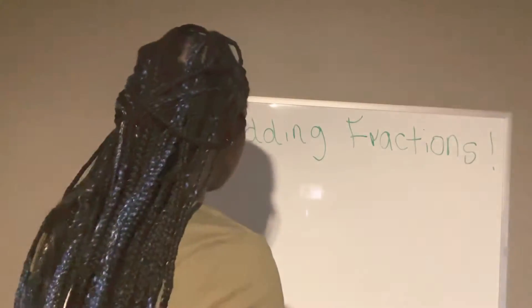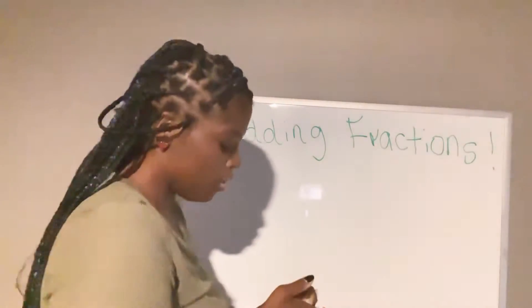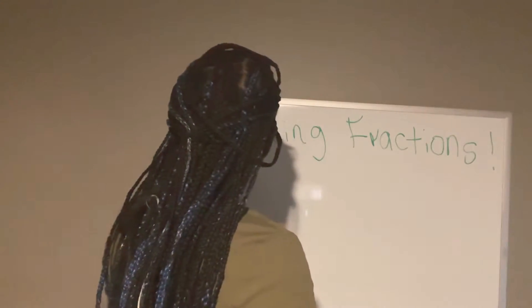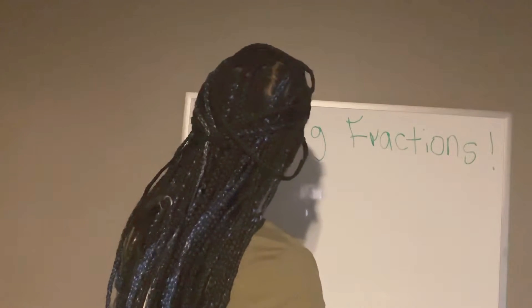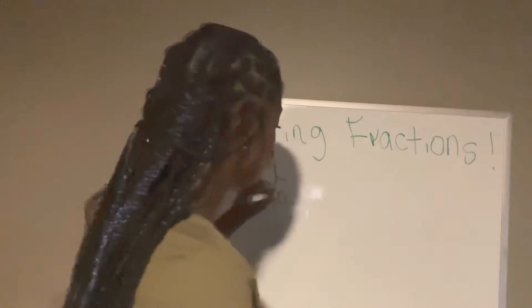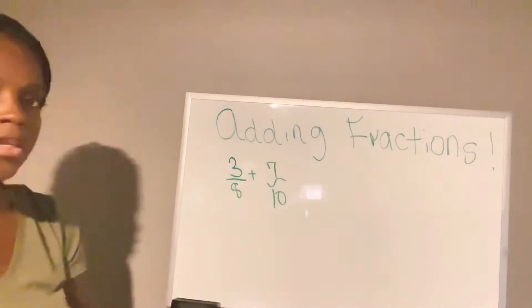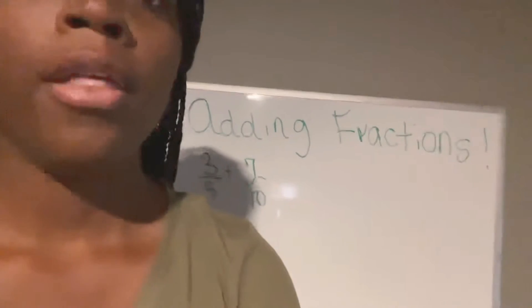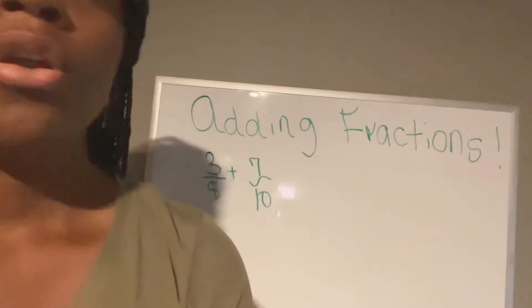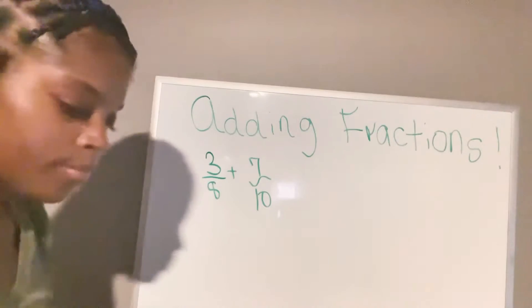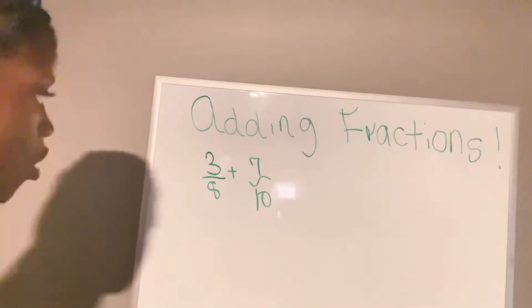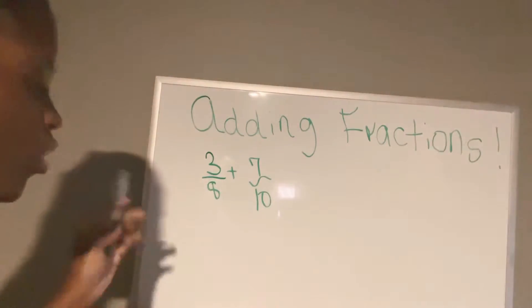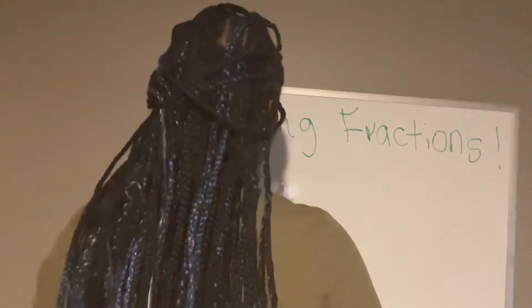This is going to be a short video. Let's look at a problem. Three over eight plus seven over ten. Let me zoom a little closer so you guys can see. Now, when you're adding fractions, if the denominator is the same, you have to do a bunch of stuff. So let me keep this right here, but in the meantime I'm going to show you guys.